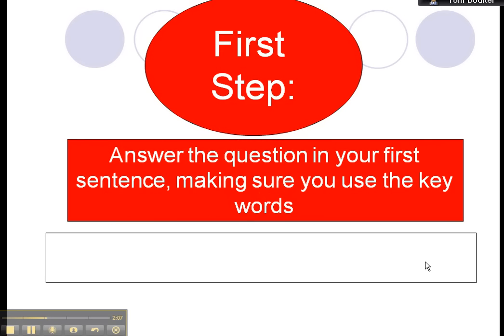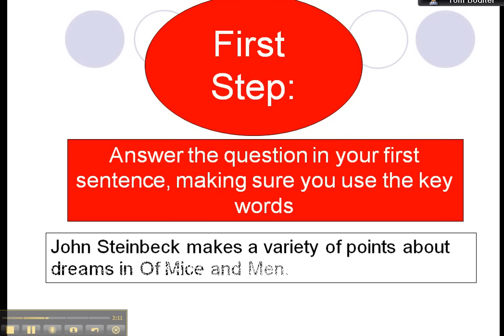So, first step, answer the question in your first sentence, making sure you use the keywords. So an example here, John Steinbeck makes a variety of points about dreams in Of Mice and Men. Okay, so you're just straight on to the question. You don't need a massive, great, big introduction. Get straight on to the question. So here, that achieves that, I think.